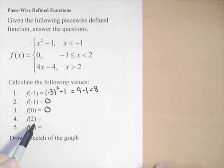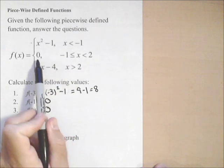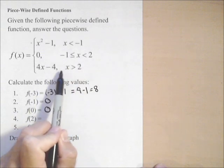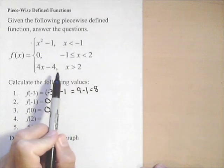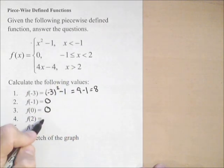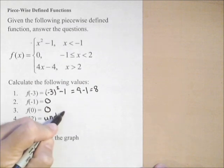f of two. Notice it's zero when x is less than two. It's four x minus four when x is greater than two. This function is not defined for x equal to two, so we would say undefined.